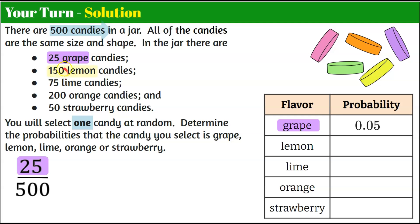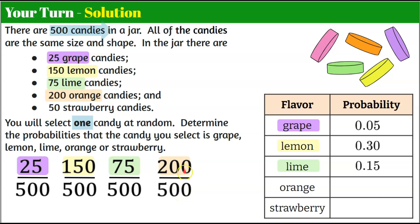Moving on to lemon. We have 150 lemon candies in a jar of 500. In your calculator, 150 divided by 500. Our lemon probable outcome is 0.30. Let's move on to lime. We have 75 lime in a jar of 500. 75 divided by 500 gives us 0.15. We have 200 orange candies in a jar of 500 candies. 200 divided by 500 gives us an orange probability of 0.40 or 40 hundredths. And our last, we have 50 strawberry candies in a jar of 500 candies. 50 divided by 500 gives us a strawberry probability of 0.10 or 10 hundredths.